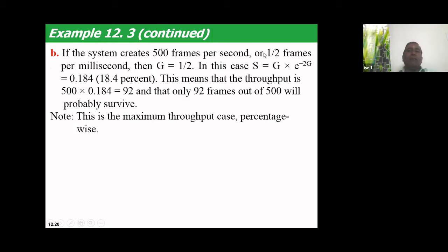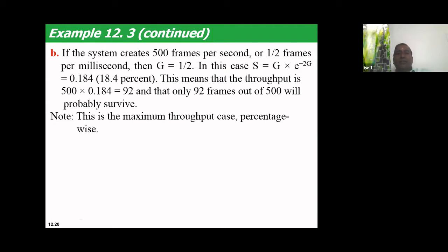With G = 0.5, S = 0.5 × e^(−1), which gives 0.184, that is 18.4%. Out of 500 packets sent, only 18.4% reach the destination. Throughput is the number of packets sent by the sender that actually arrive at the receiver.